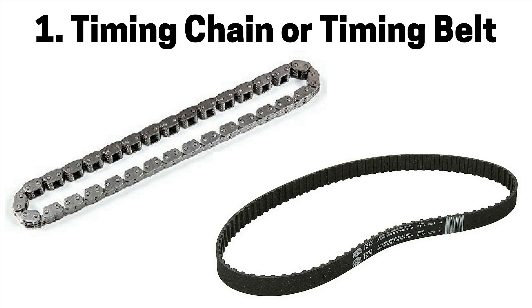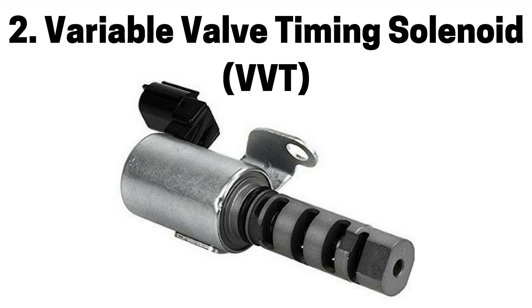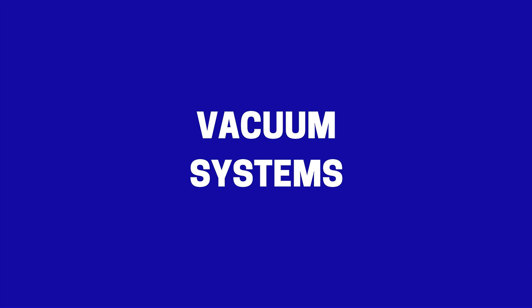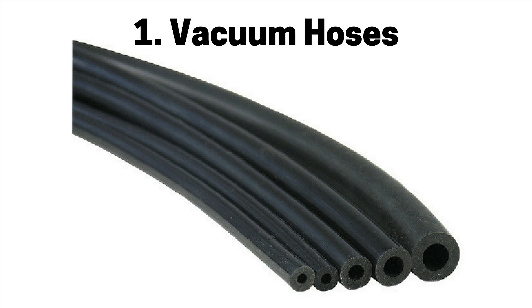Next pertains to timing systems. Number one is a timing chain or timing belt that has slipped or jumped on the drive gears, or been incorrectly installed, causing engine misfire and a check engine light. Number two is a faulty variable valve timing solenoid, also referred to as a VVT, which can also be caused by low or dirty engine oil, causing engine misfire and a check engine light. Last pertains to vacuum systems. Number one is a faulty vacuum hose due to being broken, disconnected, or leaking, which can cause a lean air fuel mixture, engine misfire, and a check engine light.